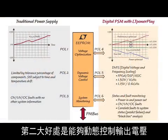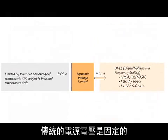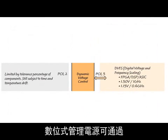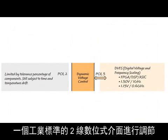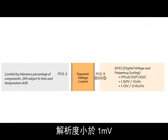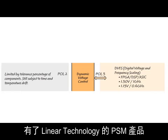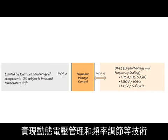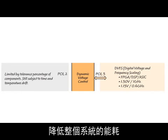The second benefit is the ability to dynamically control the output voltage. The traditional supply voltage is fixed and can't be easily changed on the fly. A digitally managed supply is adjustable via an industry-standard two-wire digital interface with better than one millivolt of resolution. With Linear Technology's PSM products, you can fine-tune system performance and minimize wasted power, enabling techniques such as dynamic voltage and frequency scaling, reducing overall system energy consumption.